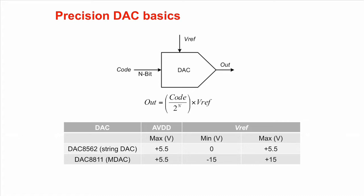One is a string DAC, the DAC8562, and other is an MDAC, the DAC8811. You can see the VREF pin for MDAC can vary from minus 15 to plus 15 volts, while the supply, the AVDD pin, is at 5.5 volt.